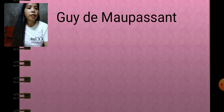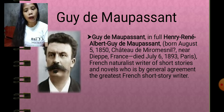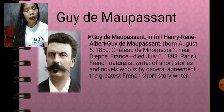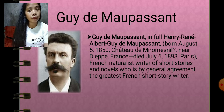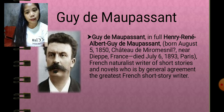The next foreign short story writer is Guy de Maupassant. His full name is Henry René Albert Guy de Maupassant. He was born on August 5, 1850, in Château de Miromesnil near Dieppe, France, and died on July 6, 1893, in Paris. He is a French naturalist writer of short stories and novels, and is by general agreement considered the greatest French short story writer.